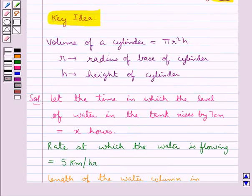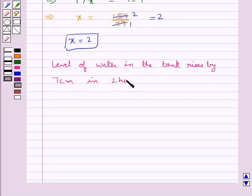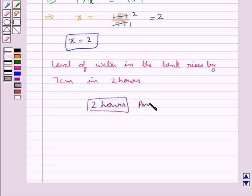We had assumed that the time in which the level of water in the tank rises by 7 cm is x hours. So we can now say the level of water in the tank rises by 7 cm in 2 hours. So 2 hours is our final answer. This completes the session. Hope you have understood the solution of this question.